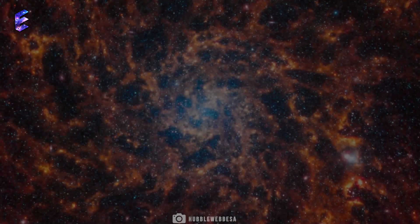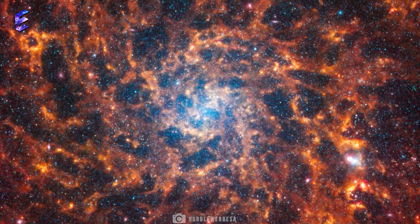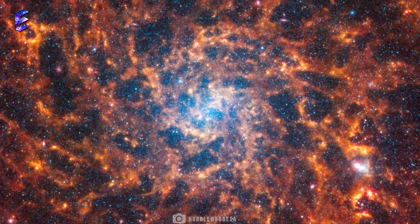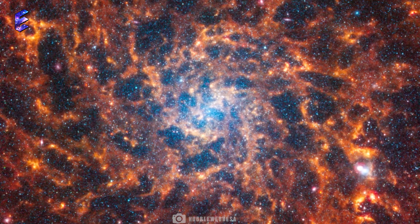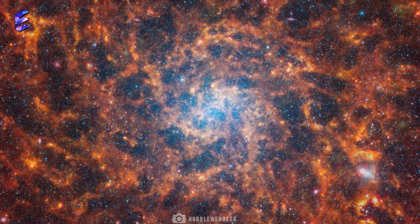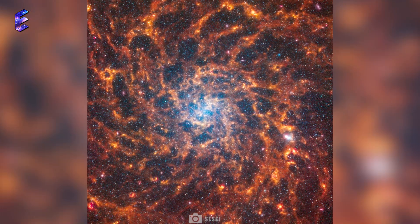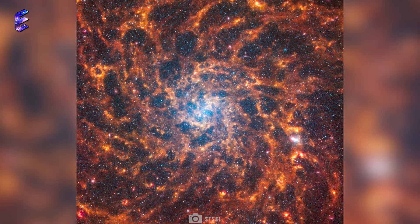What makes the images of these 19 spiral galaxies by Webb remarkably extraordinary is that Webb has provided the highest resolution images of these galaxies in the infrared wavelength. Webb has made it possible to see the smallest details of even tiny bubbles and filaments in these galaxies.